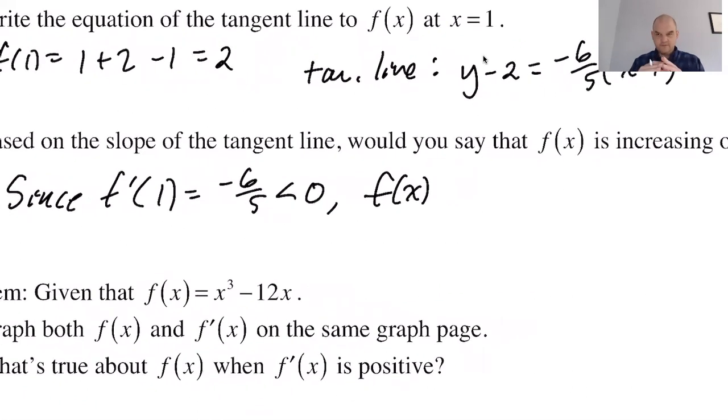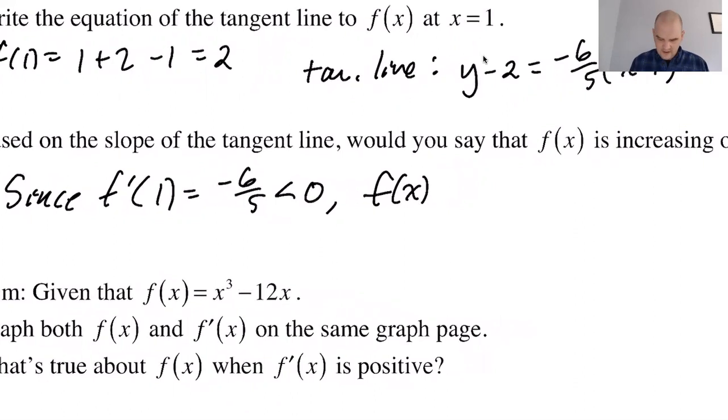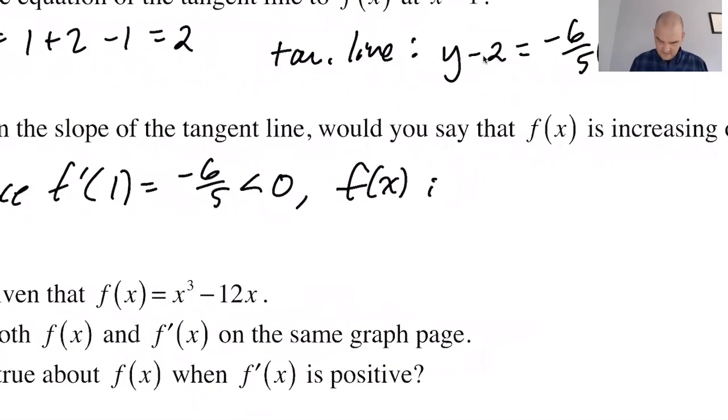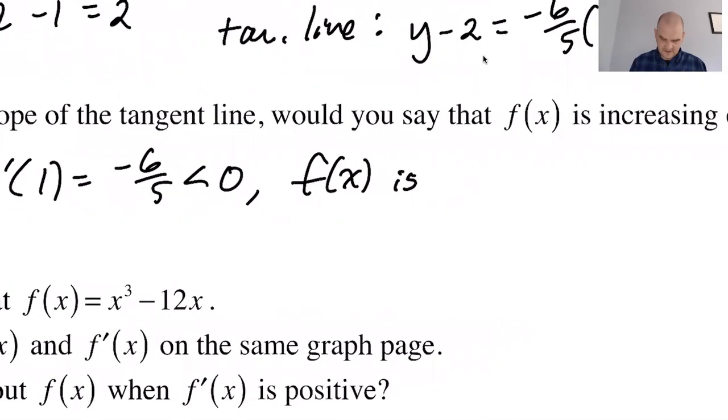When we say increasing and decreasing, we always mean as we move from left to right—it's a very biased way of talking, but always as we move from left to right. So as you move from left to right through x equals 1, the function will decrease. So f of x is decreasing at x equals 1.